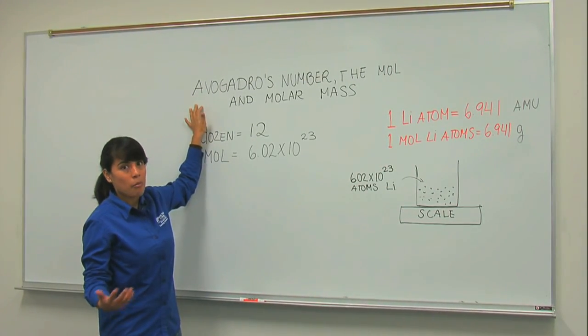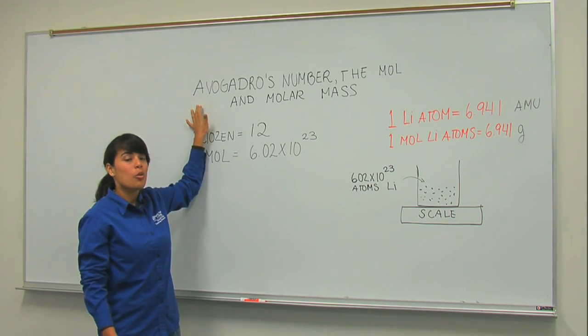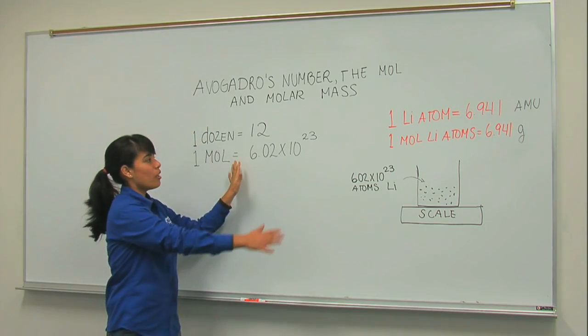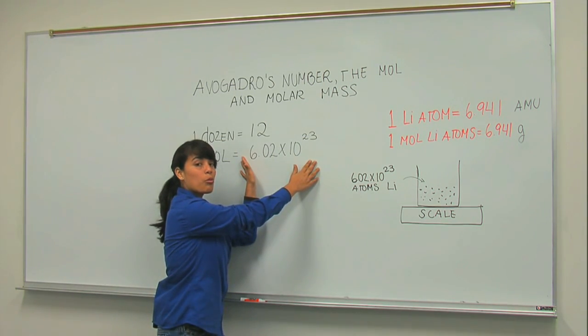Avogadro's number is a number, just like we have the number 5, number 20. We have a big number, this number here: 6.02 times 10 to the 23, and that's called Avogadro's number.